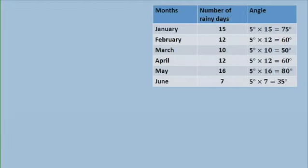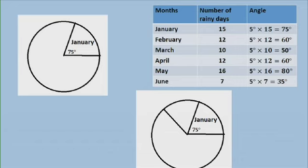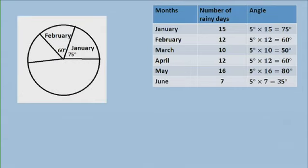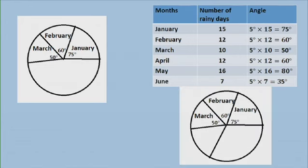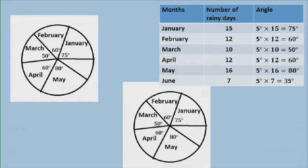Now to draw the pie chart. The first angle for January is 75 degrees — using your protractor, you measure 75 degrees. Then for February, 60 degrees. For March, 50 degrees. For April, 60 degrees. For May, 80 degrees. And for the last one, June, it should be 35 degrees. You can check whether it gives an angle of 35 degrees.